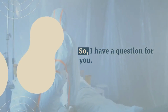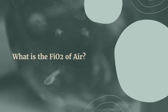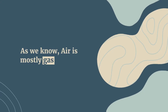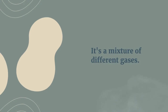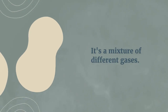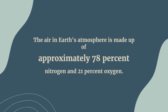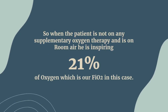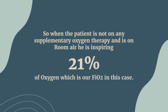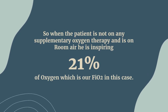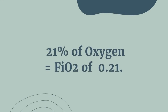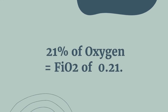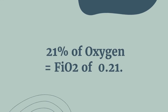FiO2 is the fraction of oxygen in air. So, I have a question for you: what is the FiO2 of air? Yes, it's 21%. Air is a mixture of different gases. The air in Earth's atmosphere is made up of approximately 78% nitrogen and 21% oxygen. So when the patient is not on any supplementary oxygen therapy and is on room air, they are inspiring 21% oxygen, which is our FiO2 in this case. The fraction of inspired oxygen the patient is receiving is expressed as a decimal, so 21% equals an FiO2 of 0.21.